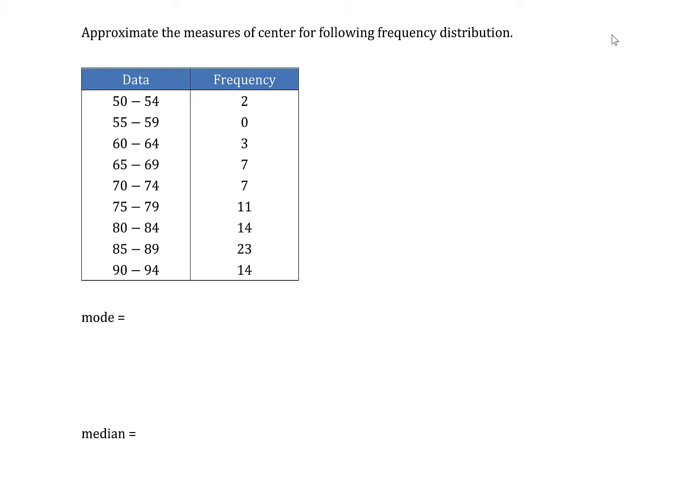So what we're going to do is calculate the midpoints of each of the classes. Now the midpoint between 50 and 54 is the average of the class limits. So a lower class limit of 50 and upper class limit of 54, that midpoint should be 52.